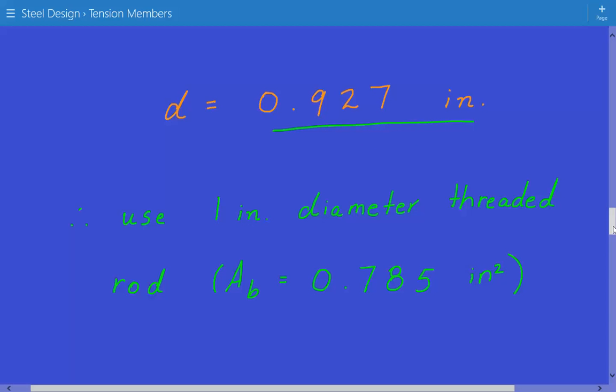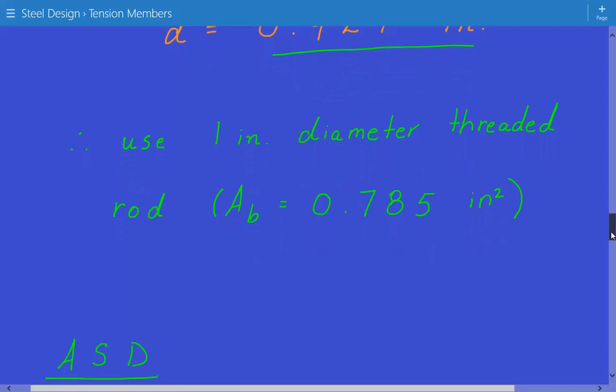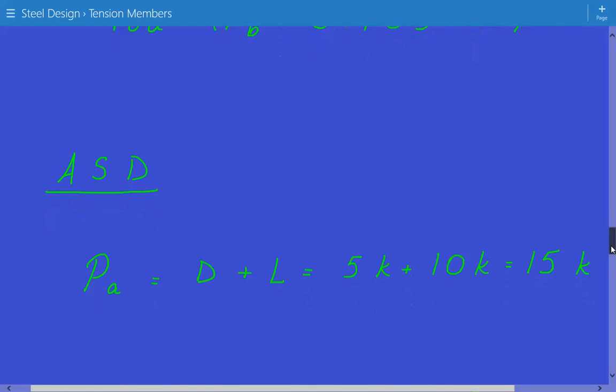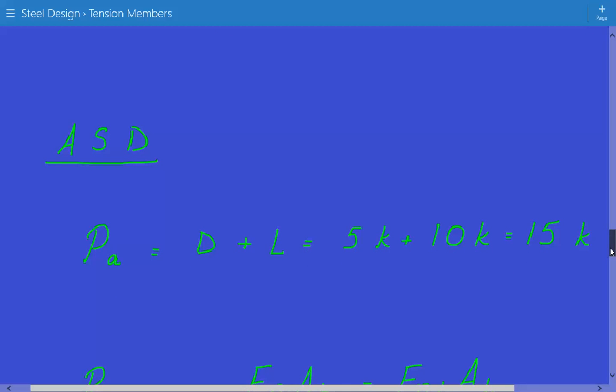Now that we're done with the LRFD approach, we're going to do the ASD approach. Again, we first calculate the factored load based on ASCE 7 load combinations. That's equal to dead load plus live load for ASD. So it's 5 kips plus 10 kips equals 15 kips.